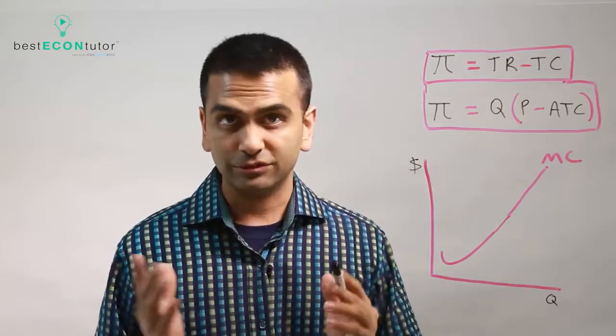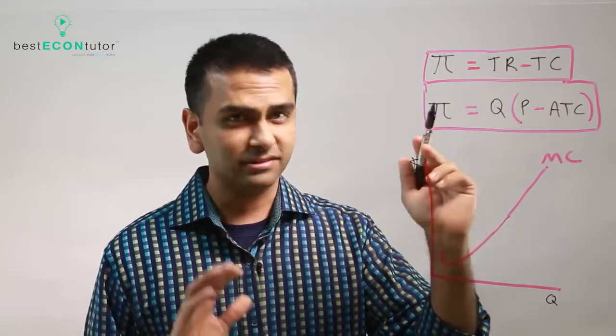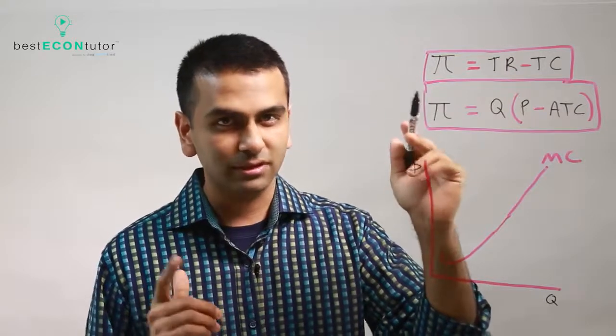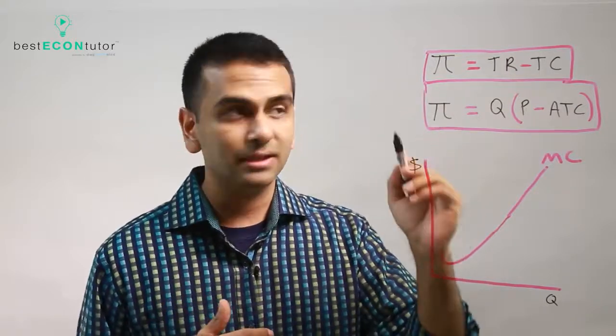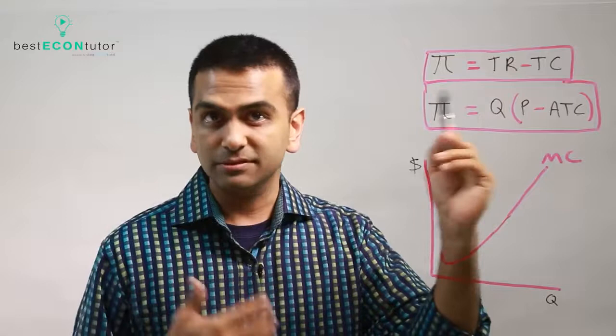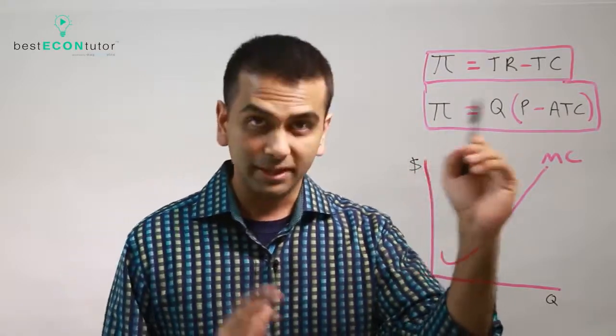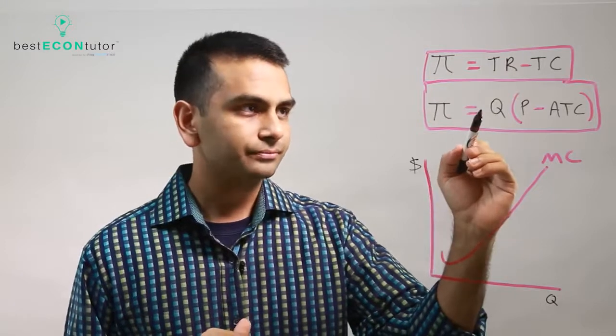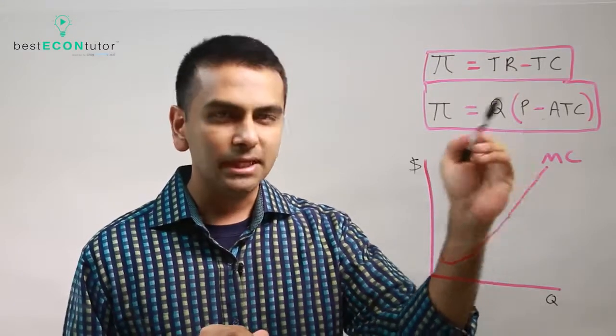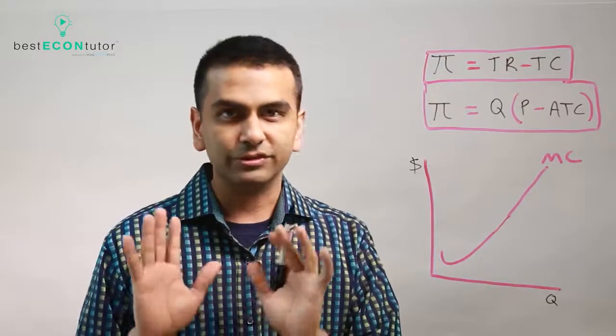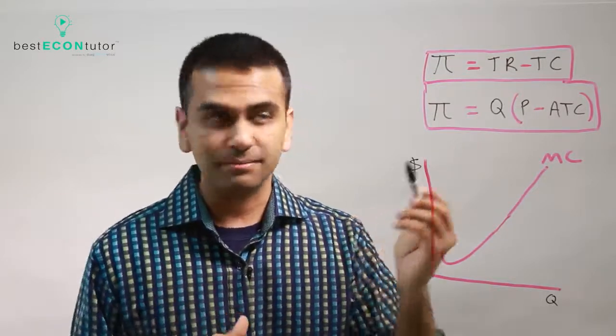Now another useful equation for profits is this. It's actually the exact same equation written in a different way, and as we'll see, if we use this, it sometimes makes it easier to calculate it or to visualize it graphically. So it is important to know this equation. It's Q times P minus ATC. First of all, just mathematically, why is it the same thing?